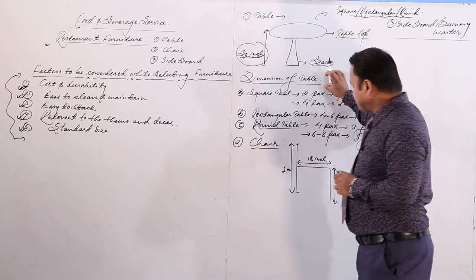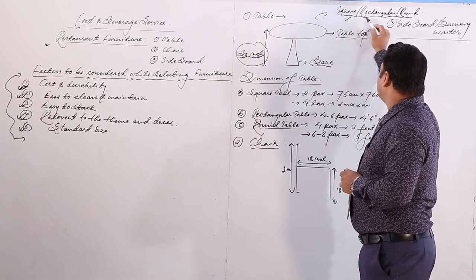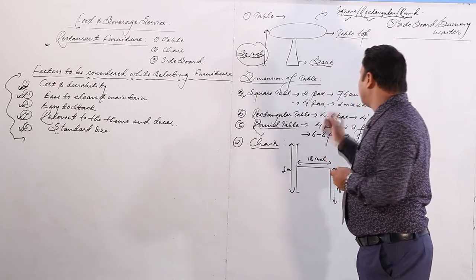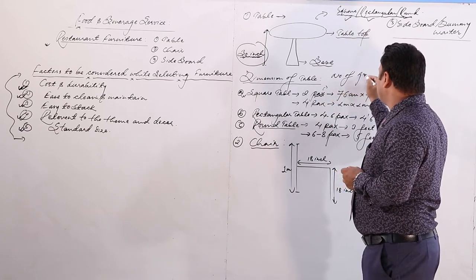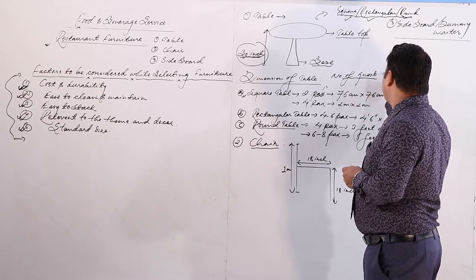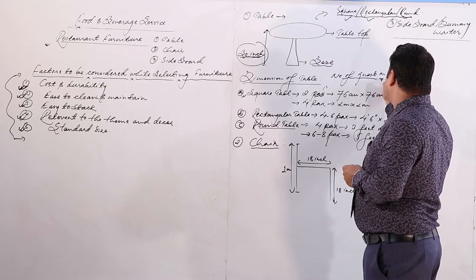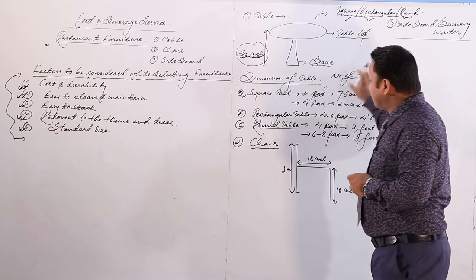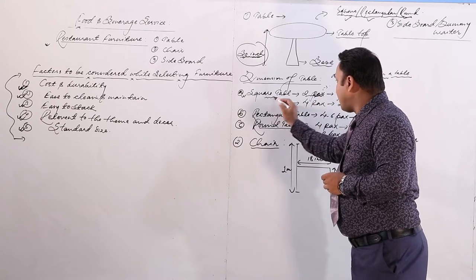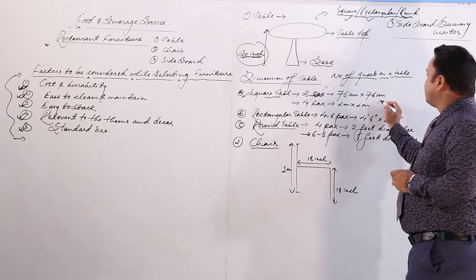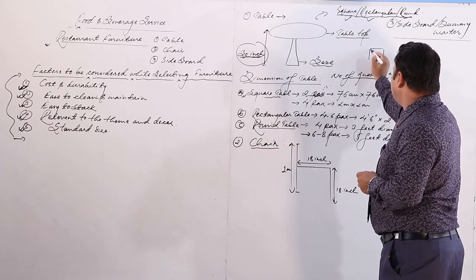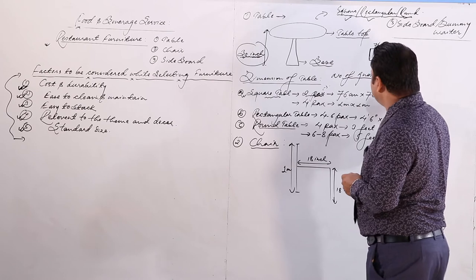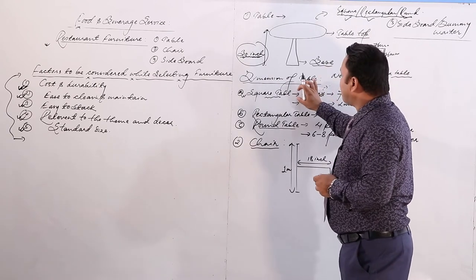Now let us look at the dimensions of a table. Tables are available in three shapes. For a square table for two packs — packs means the number of guests — the size should be 76 centimeters by 76 centimeters. Since it's square, both length and breadth are equal at 76 centimeters. For a square table for four packs, the size should be one meter by one meter.